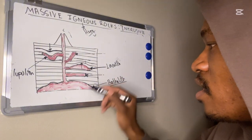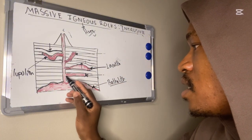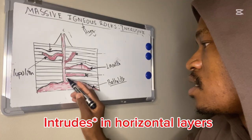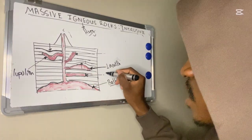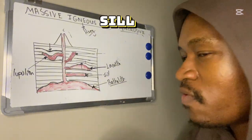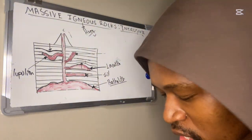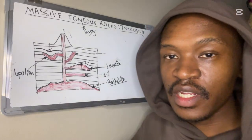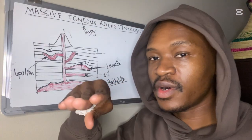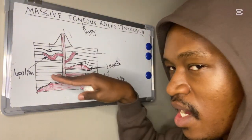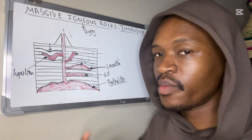This next one cooled in a horizontal layer — we call this one our sill. Think of a window sill — it is horizontal. When a sill is exposed to the surface, it can form our flat-topped mountains.